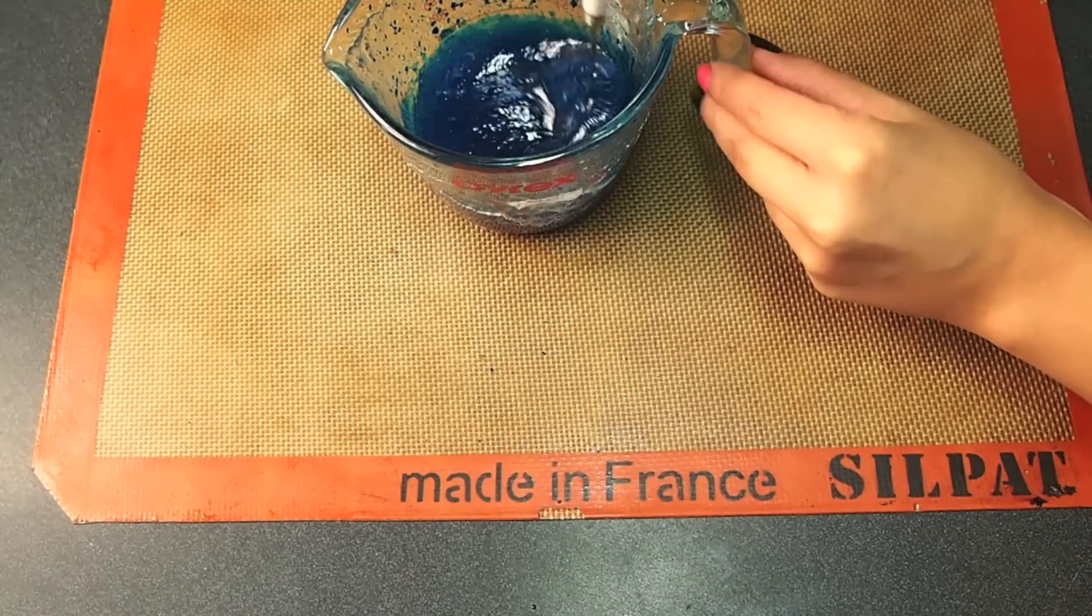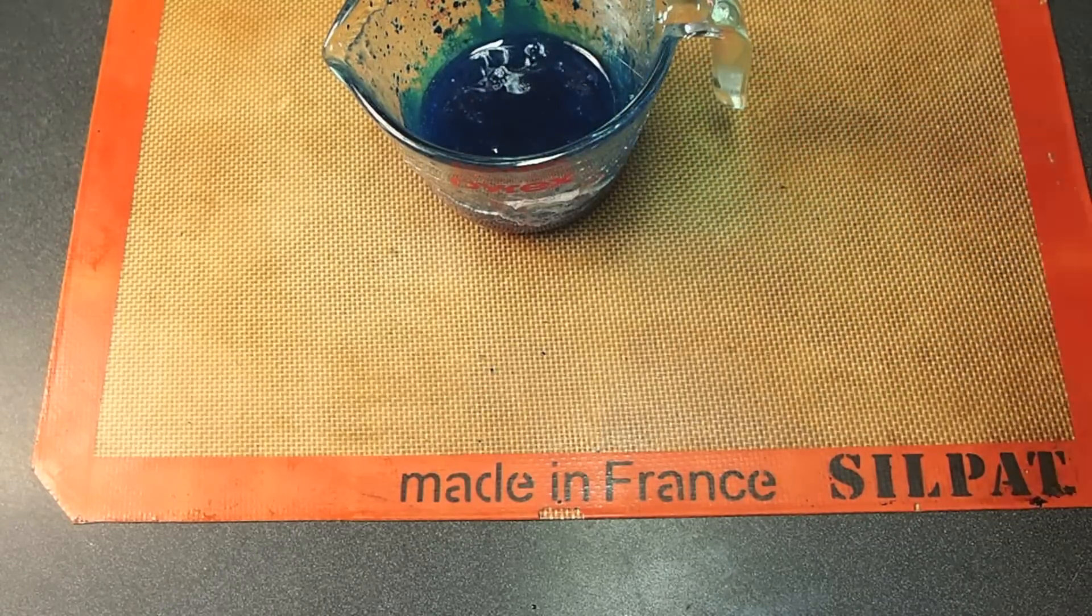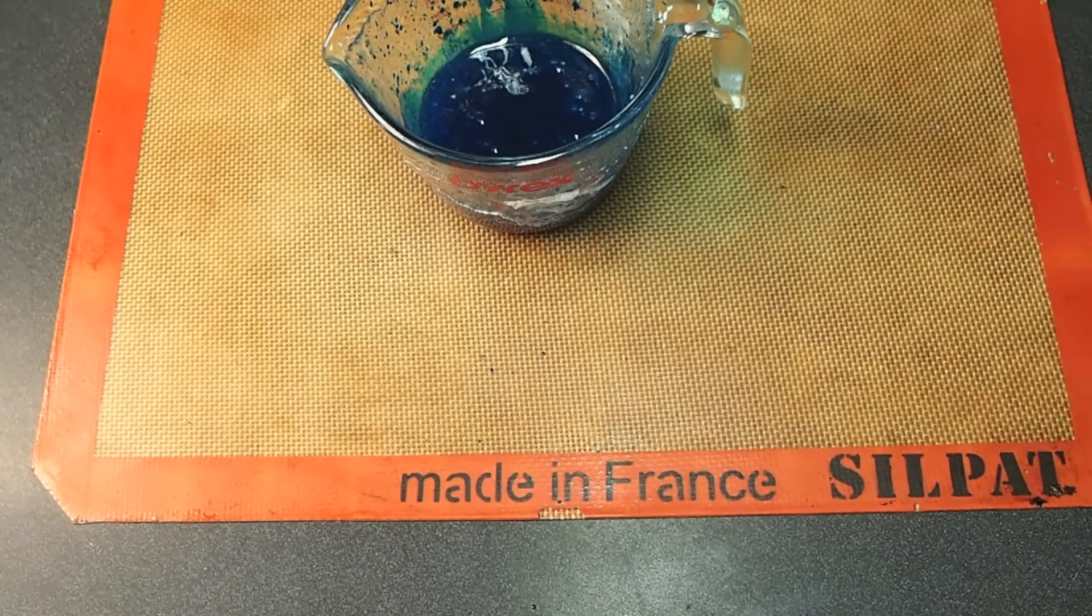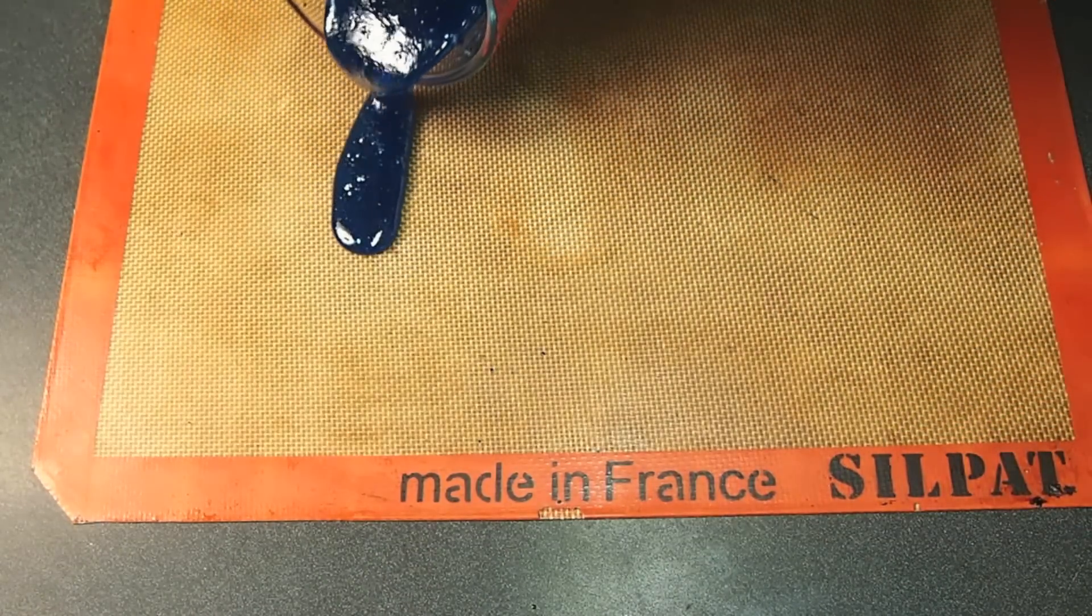I have some parchment or silpat standing by because I want to pour it on there and let it harden. Be careful because it is hot sugar, and just pour it onto your prepared surface.